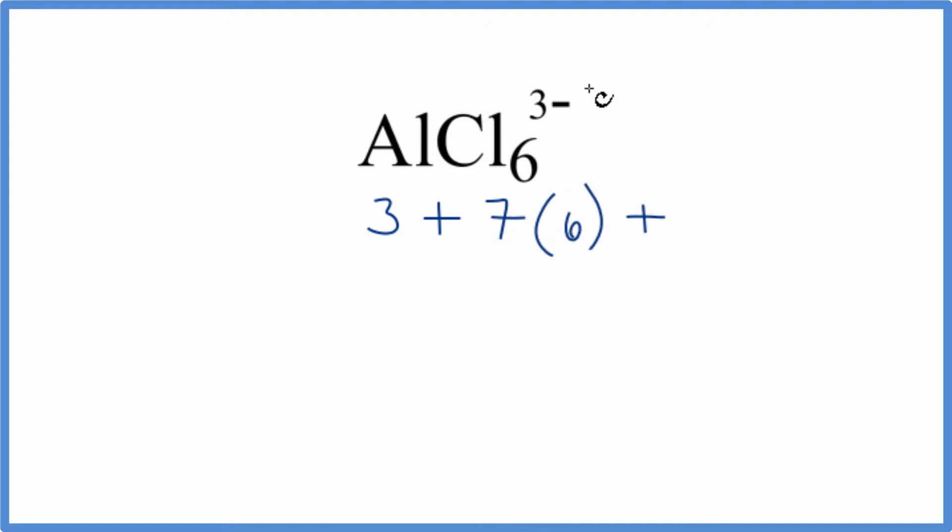And then for the 3-, that means we have three additional electrons, three additional negative charges. We'll add that here. We add this all up, we get 48 total electrons for the AlCl6 3- Lewis structure.